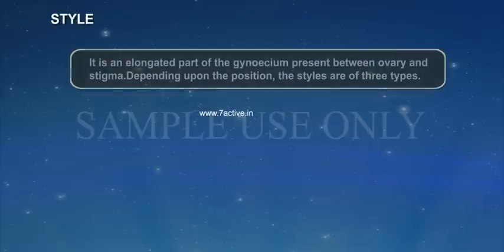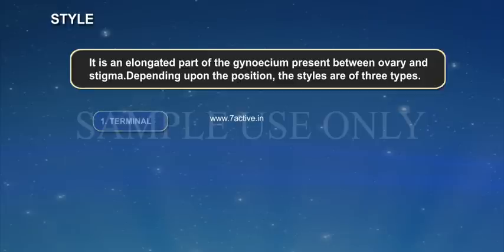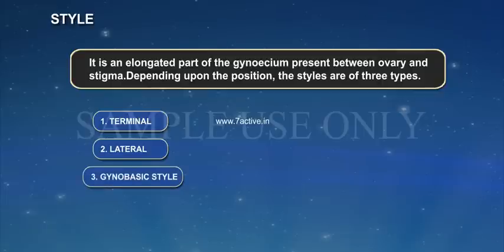Style: It is an elongated part of the gynoecium present between the ovary and the stigma. Depending upon the position, styles are of three types: 1. Terminal, 2. Lateral, and 3. Gynobasic.